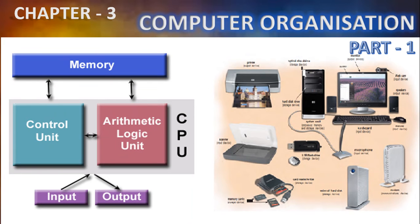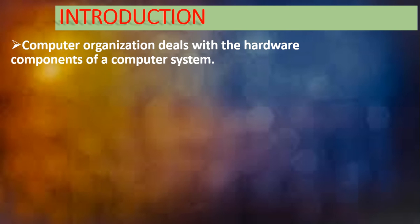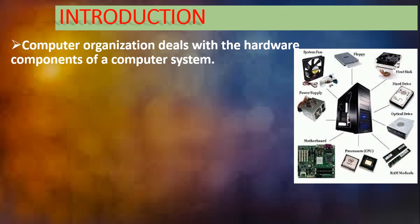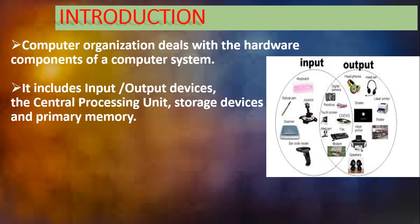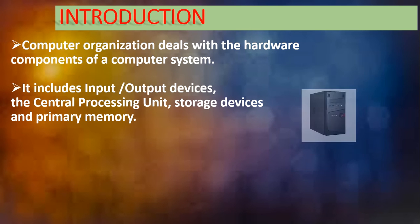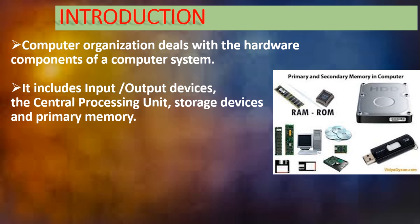We are going to discuss Chapter 3: Computer Organization Part 1. In the previous chapter we discussed how data can be represented in a computer. In this chapter we are going to learn about computer organization. Computer organization deals with the hardware components of the computer system. There are two components of a computer: hardware and software. Computer organization deals only with the hardware — it includes input and output devices, the central processing unit, and storage devices, which include primary and secondary memory.